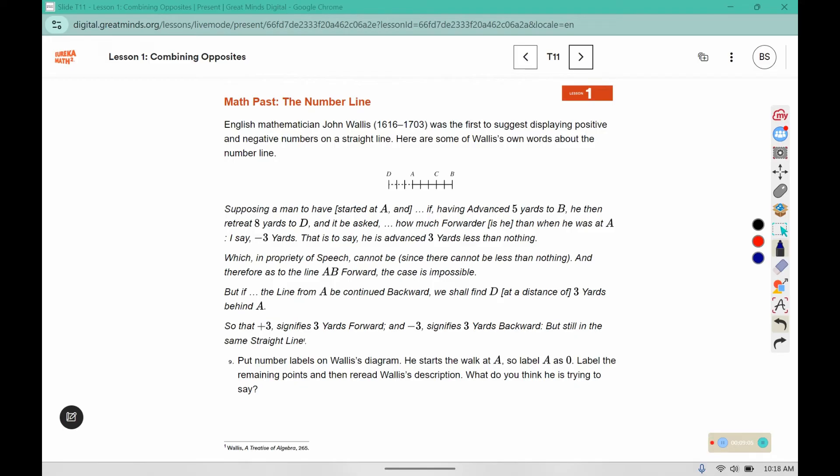And therefore, as to the line AB forward, the case is impossible. But if the line from A be counted backward, we shall find D at the distance of 3 yards behind A. So that, plus 3 signifies 3 yards forward, and negative 3 signifies 3 yards backwards. But still in the same straight line. Number 9 asks us to put number labels on Wallace's diagram. He starts the walk at A, so label A as 0. Label the remaining points and then re-read Wallace's description. What do you think he is trying to say?